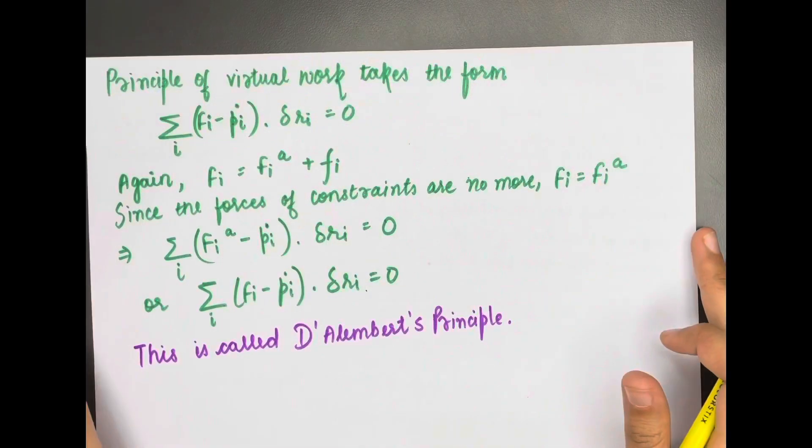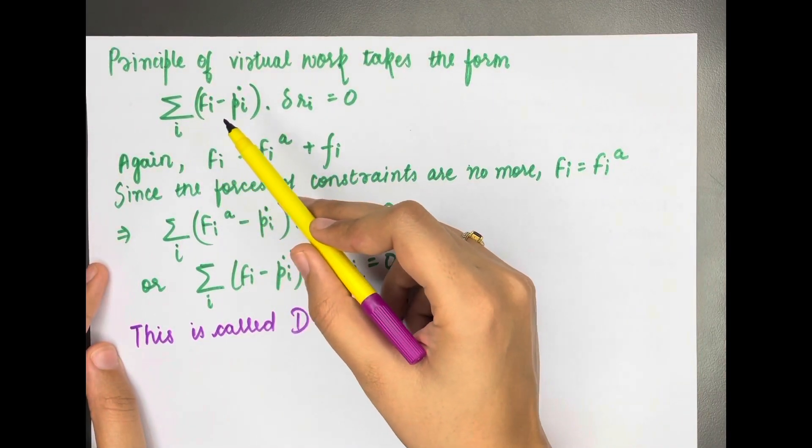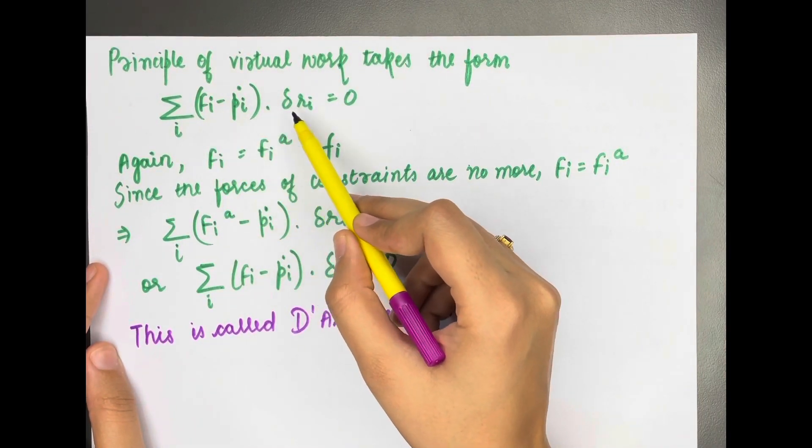The principle of virtual work takes the form: summation over i of (Fi - pi dot) · δri = 0.